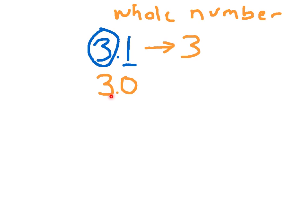I flexed my muscles like a hero — digits to the right of that circle digit went to 0. However, when I'm writing a whole number, I don't write 3.0. I don't write 3 and 0 tenths. What I do is I just write 3. So 3 and 1 tenth rounded to the nearest whole number is 3.